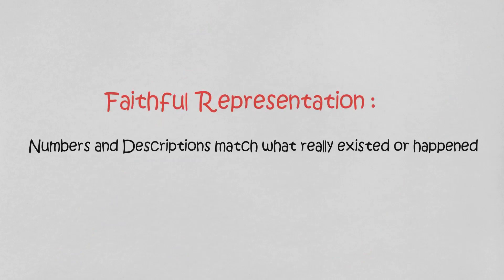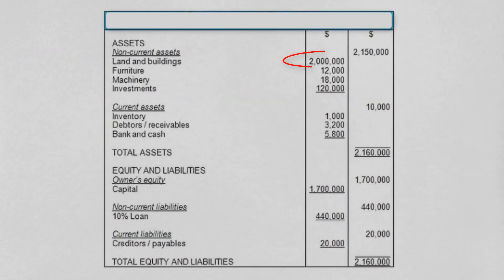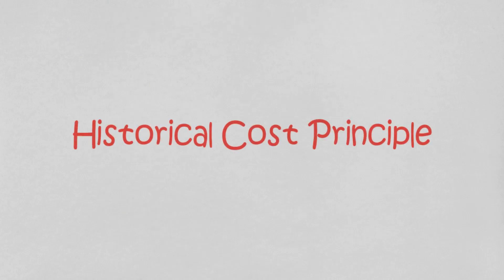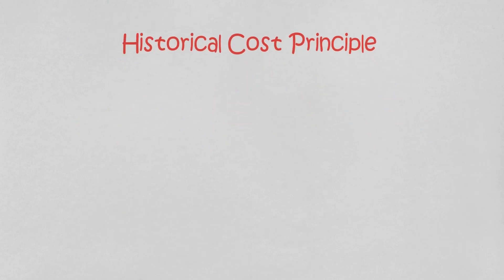Faithful representation means that the numbers and descriptions match what really existed or happened — they're factual. Faithful representation is a necessity because most users have neither the time nor the expertise to evaluate the factual content of the information. For example, if a company reported in its balance sheet that it had two million dollars worth of land and buildings as of the end of June, then that amount should indeed have been present on that date.